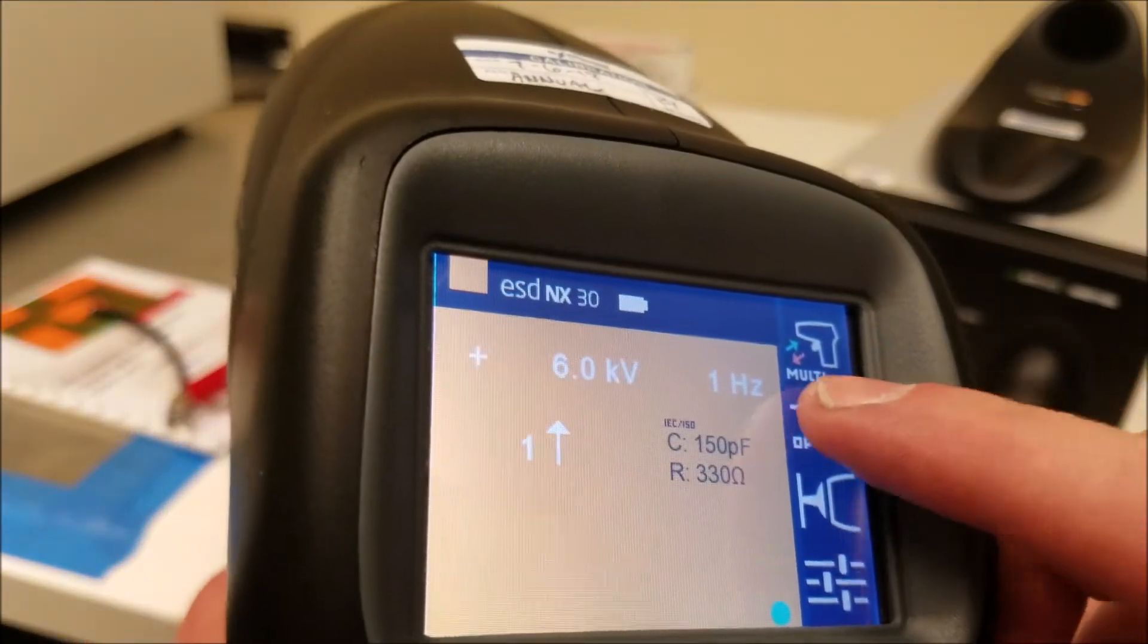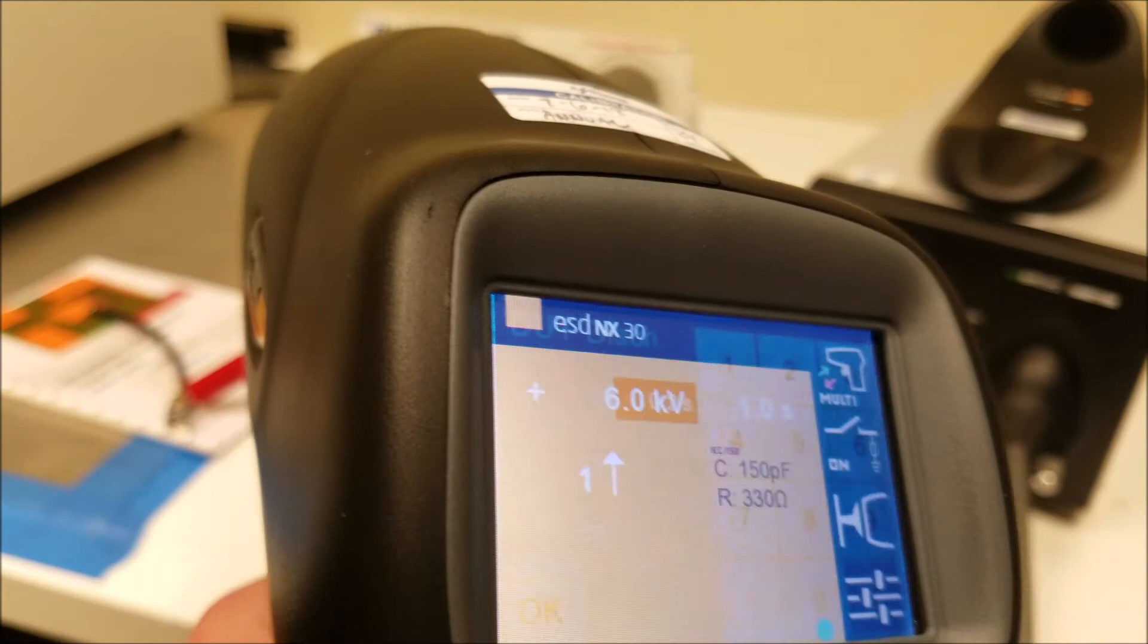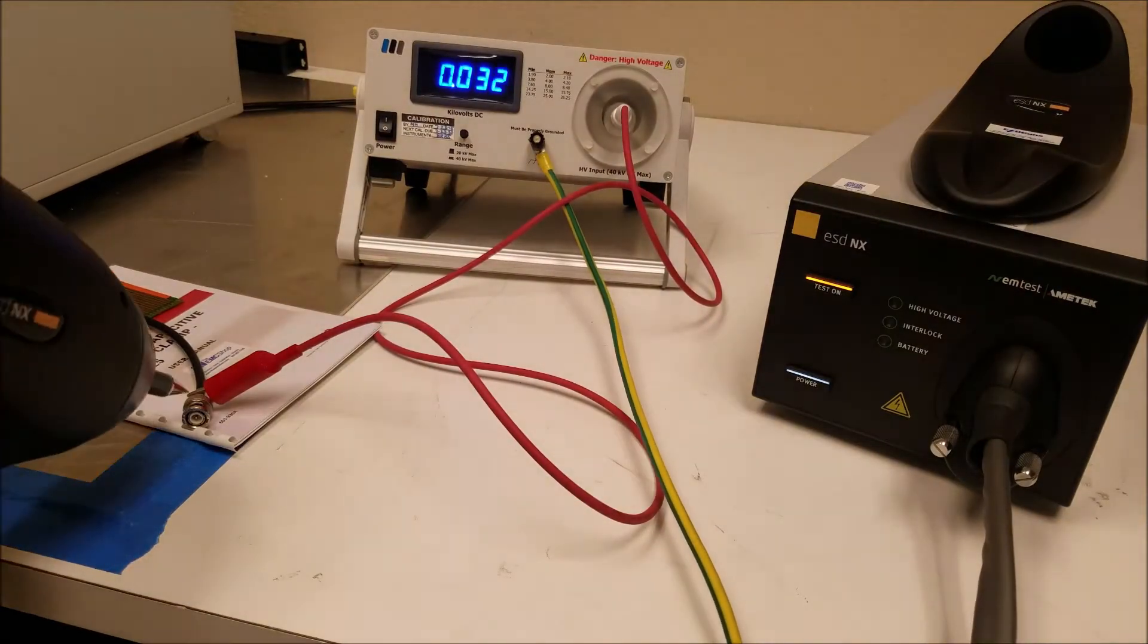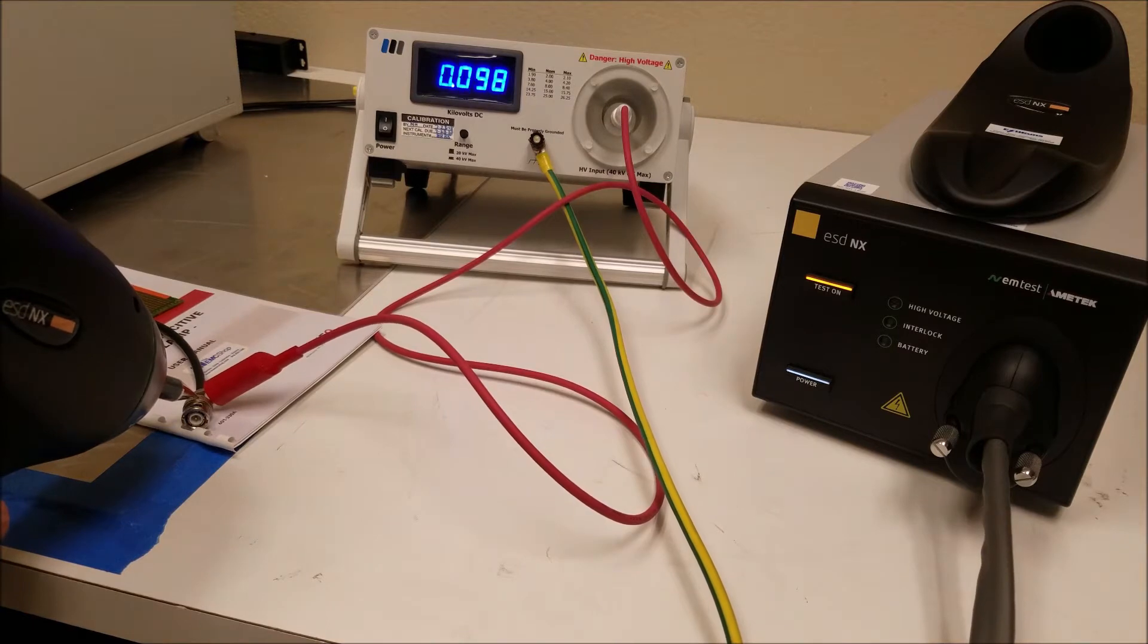We'll select the relay icon which has three events: discharge, open relay, and close relay. Now when we discharge, you'll see the charge removed through the test tip before the next discharge.